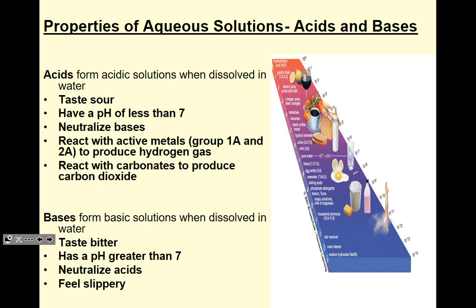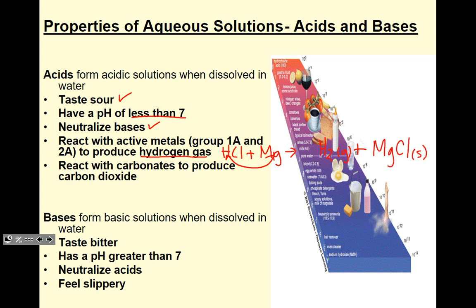Aqueous solutions can be neutral, acidic, or basic. Acids form acidic solutions when dissolved in water. Their properties include: they taste sour, have a pH less than 7, they neutralize bases, and they react with active metals — typically Group 1 and Group 2 — to produce hydrogen gas. For example, HCl reacting with magnesium produces a single replacement reaction: the metal displaces the hydrogen, giving H₂ gas plus MgCl₂. Acids also react with carbonates to produce carbon dioxide.